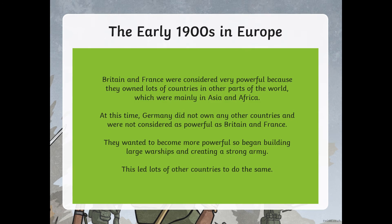During the early 1900s, Britain and France were considered very powerful because they owned lots of countries in other parts of the world, mainly Asia and Africa. At this time, Germany did not own any other countries and was not considered as powerful as Britain and France. They wanted to become more powerful, so began building large warships and creating a strong army. This started to concern other countries, and so they started to do the same thing too.